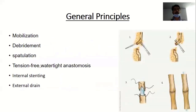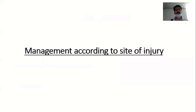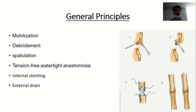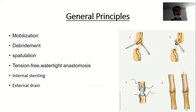General principles for ureteric repair include proper mobilization of both ends of the ureter, followed by debridement of any devitalized tissue, and wide spatulation and tension-free watertight anastomosis over an internal stent with external drainage. You should have minimum debridement — if you lose a larger length of ureter it becomes difficult to have a tension-free anastomosis. Both ends should bleed when you cut the devitalized tissue. The anastomosis must be spatulated and if you find it is under tension, do an omental wrap to provide blood supply and secure the anastomosis, because leakage is quite common after end-to-end anastomosis.